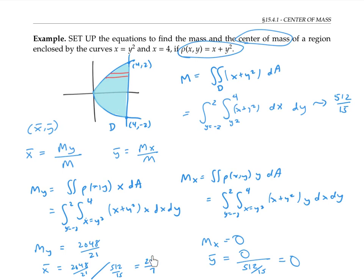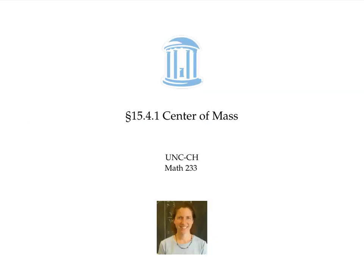It's plausible that ȳ = 0, since both the region and the density function are symmetric with respect to the x-axis, so the fulcrum belongs on the x-axis. The value x̄ = 20/7 ≈ 2.86 is also plausible, placing the horizontal position of the fulcrum roughly in the middle of the region. In this video, we used the analogy of a seesaw to figure out the center of mass of a thin rod and of a thin lamina.